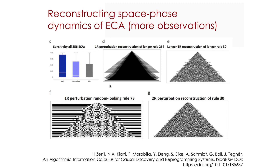In figure D is the reconstruction of one of the simplest elementary cellular automata, again rule 254, and in figure E one of the most random-looking ECA — both after 280 steps. In both cases, it is illustrated how the perturbation-based algorithmic calculus for model generation, in two opposite behavioural cases, actually reconstructs the cellular automata with some accuracy.